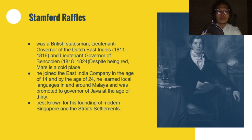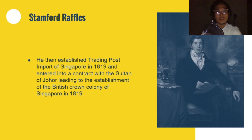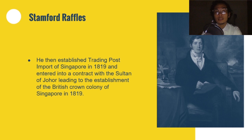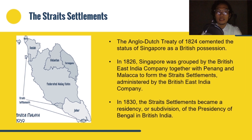Raffles established the trading post of Singapore in 1819 and entered into a contract with the Sultan of Johor, leading to the establishment of the British Crown Colony in Singapore. A formal treaty was signed on February 6, 1819, and modern Singapore was born. The status of Britain's outpost in Singapore was initially in doubt as the Dutch government protested to Britain for violating the Netherlands' sphere of influence, but as Singapore rapidly emerged as an important trading post, Britain consolidated its claim.